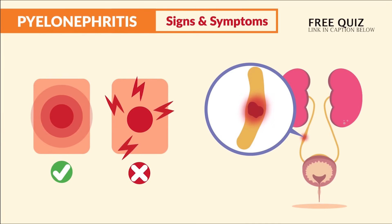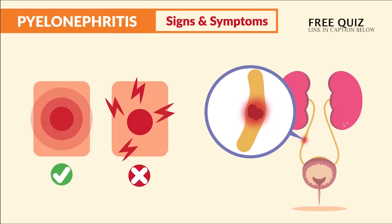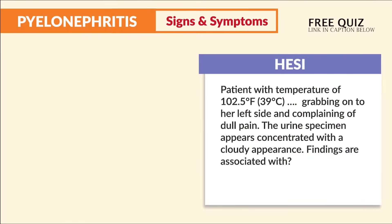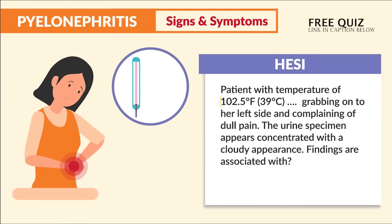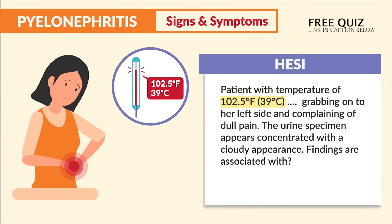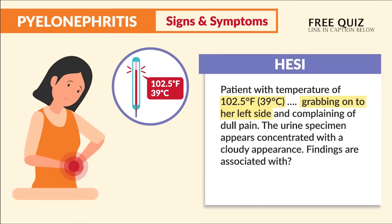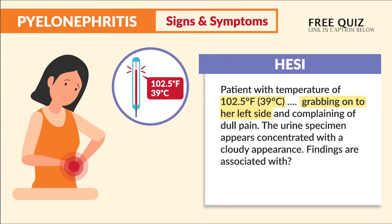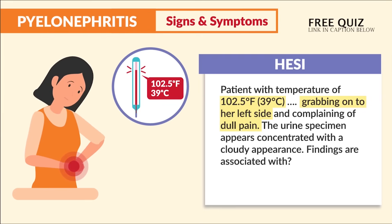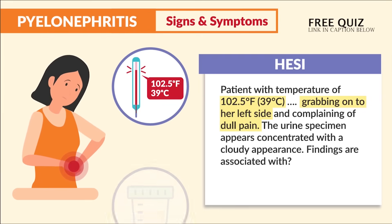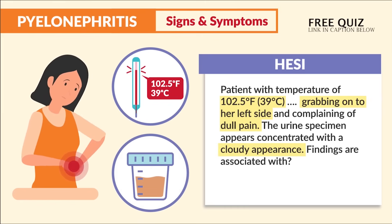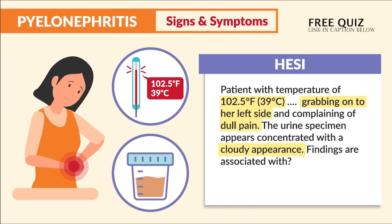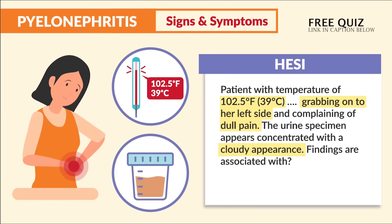Sharp pain is typical of kidney stones, which tear up the ureters as they descend toward the bladder. The key terms again are dull flank pain on the patient's side. Hesse mentions a question about a patient with a temperature of 102.5, grabbing her left side, complaining of dull pain, with a concentrated, cloudy urine specimen.